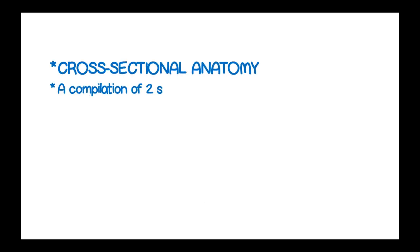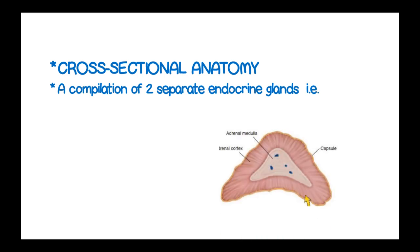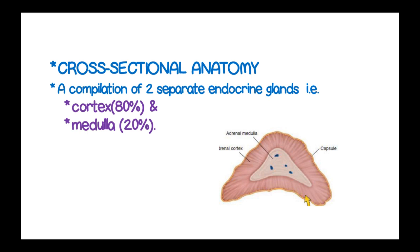In the cross-sectional anatomy of the adrenal gland, it is a combination of two separate endocrine glands — the adrenal medulla and the adrenal cortex. The adrenal cortex accounts for 80% and the adrenal medulla accounts for 20%.